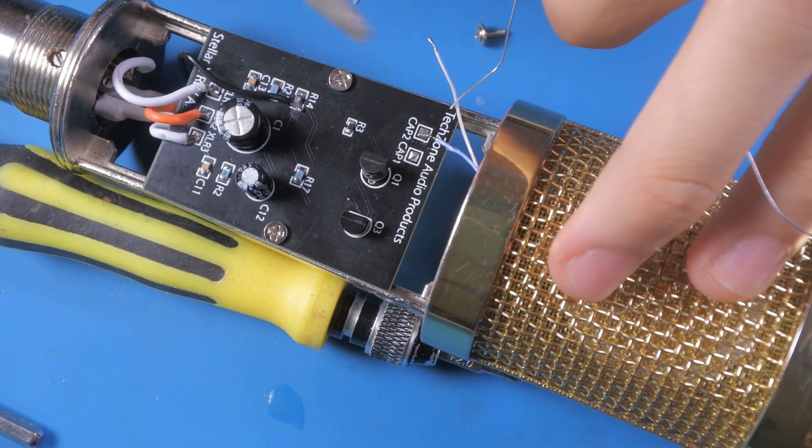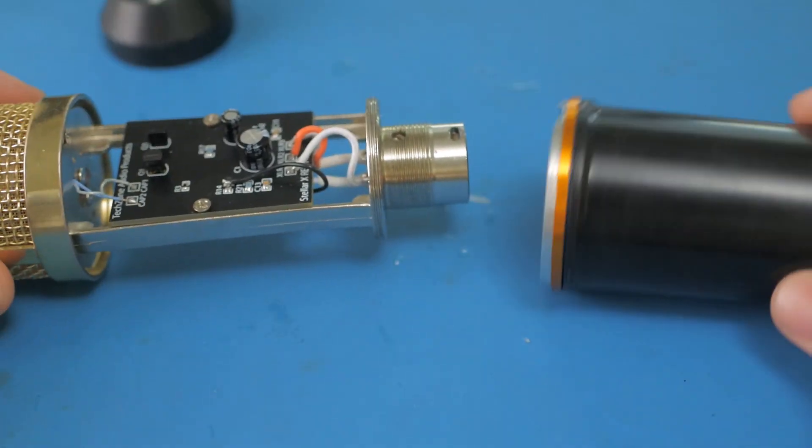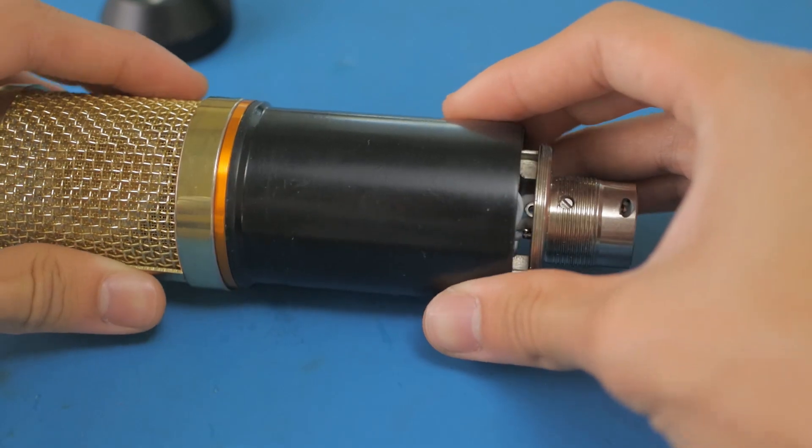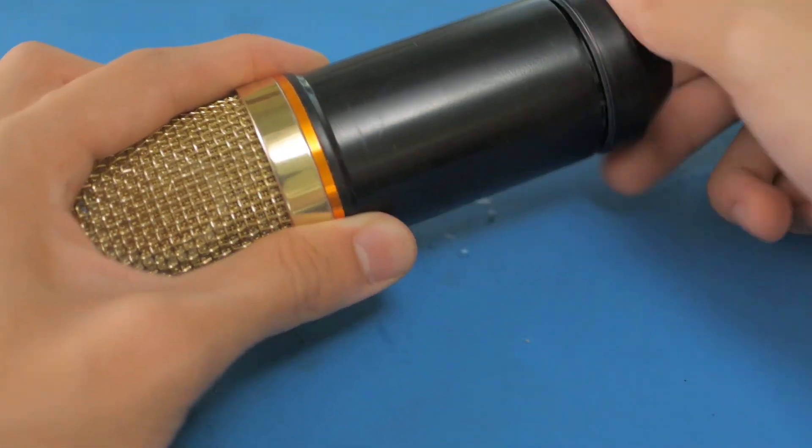Finally, the two wires of the capsule are soldered to the labeled pins on our custom board. The last step is to put the newly painted body back on. It should be pretty dry by this point, and screw in the final end cap.